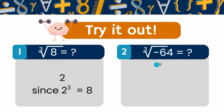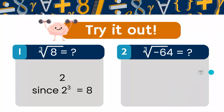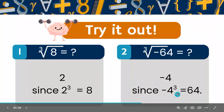Now let's look at the cube root of negative 64. If you remember, when there's a negative number inside a cube root, the answer is also negative — this is true for cube roots but not for square roots. So what number multiplied by itself 3 times equals negative 64? The answer is negative 4, since negative 4 cubed is negative 64.